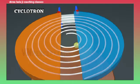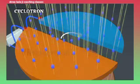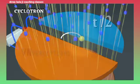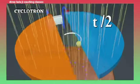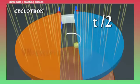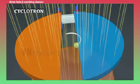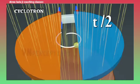The particle makes a semicircle and comes to the gap. The time taken is T by 2. Because if the time taken to complete one circle is T, then the time taken to complete semicircle would be T by 2.